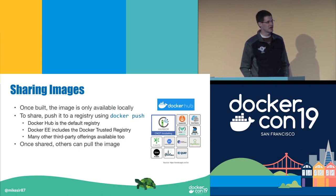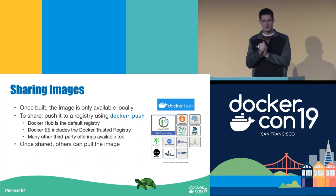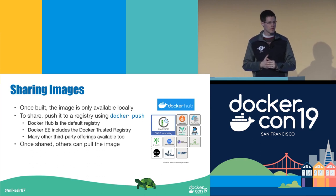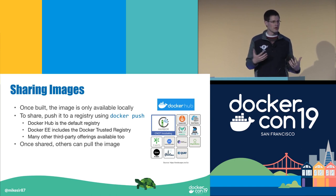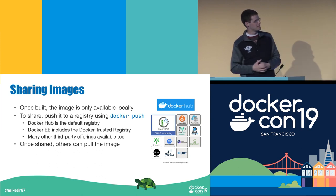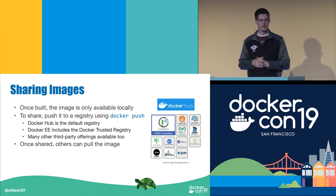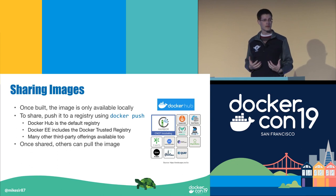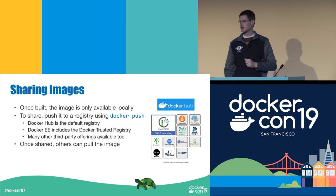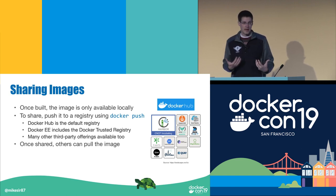Once I've built an image, how do I share it? If I had this tar file with the file system, how do I share it with the world? The way to do that is to use registries. By default, the registry is Docker Hub, but you can run your own registry, use Docker Trusted Registry, or any of the third-party offerings — there are lots of current registries part of the CNCF landscape, the Cloud Native Computing Foundation. Once it's in a registry, other people can pull the image, explode it onto their machine, run it as a container, and take advantage of that environment.